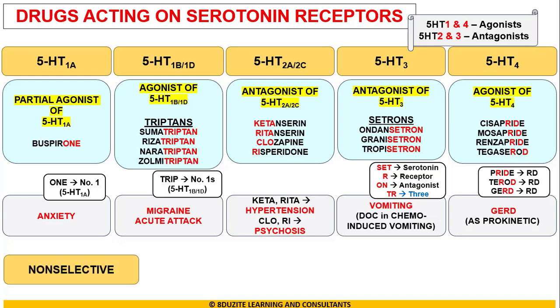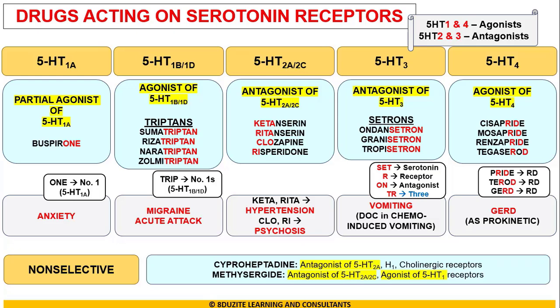A few drugs which are non-selective in nature — meaning they act on serotonin receptors as well as a few other receptors. For example, Cyproheptadine is an antagonist of 5-HT2A as well as an antagonist of H1 and cholinergic receptors. Methysergide is an antagonist of 5-HT2A/2C and also an agonist of 5-HT1 receptors.